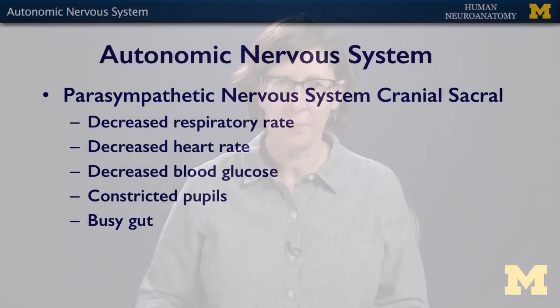The parasympathetic nervous system is cranial and sacral, in that the pre-ganglionic neurons for the parasympathetics are within the brain stem and in the sacral part of the spinal cord. This is our rest and digest system. You have decreased respiratory rate, decreased heart rate, decreased blood glucose because you're on the way to storing everything you've just digested, and constricted pupils because it's the rest and digest — going to sleep, you want less light coming in. And a busy digestive system, busy gut, with lots more peristalsis because you're digesting.